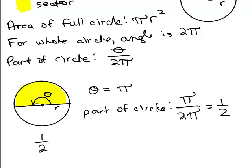Now, if I had 90 degrees, it would end up being 1 fourth, et cetera. So, the part of the circle is theta over 2 pi.